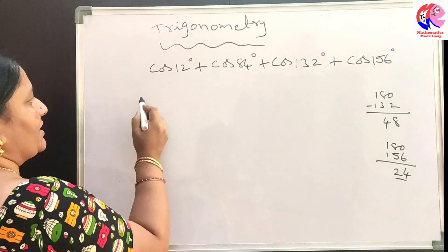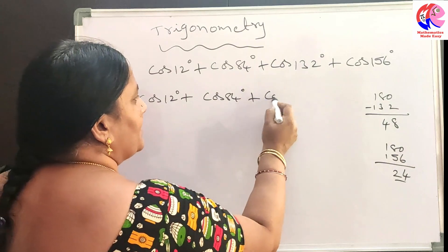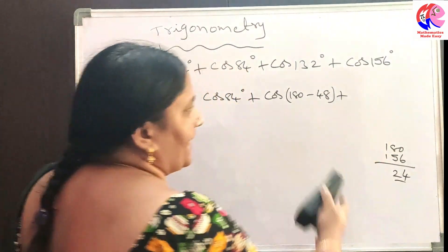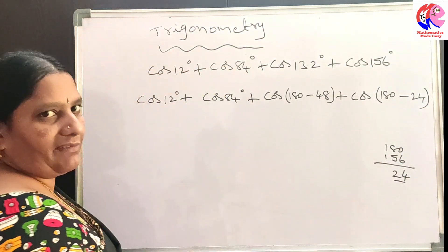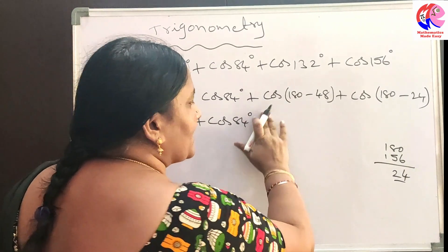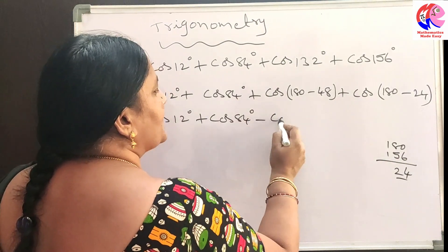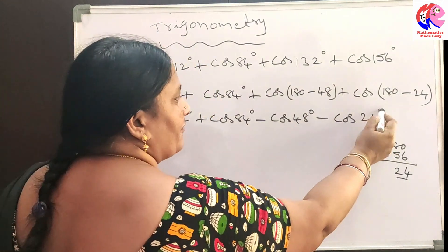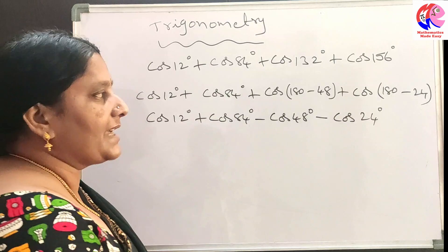The first term is cos 12 degrees and the second term is cos 84 degrees. Cos 132 degrees can be written as cos of 180 minus 48, and cos 156 degrees can be written as cos of 180 minus 24. Now, using the identity cos of 180 minus theta equals minus cos theta, the third term becomes minus cos 48 degrees and the fourth term becomes minus cos 24 degrees. So our expression is cos 12 degrees plus cos 84 degrees minus cos 48 degrees minus cos 24 degrees.